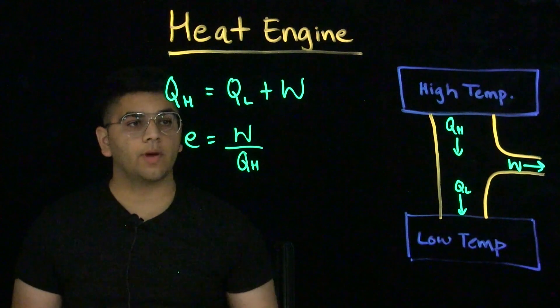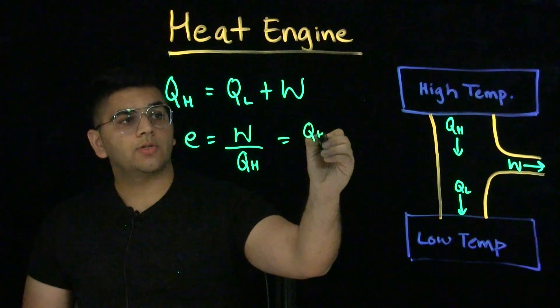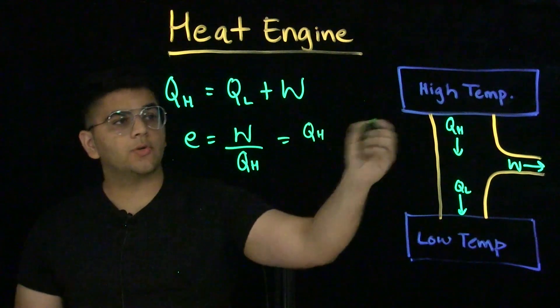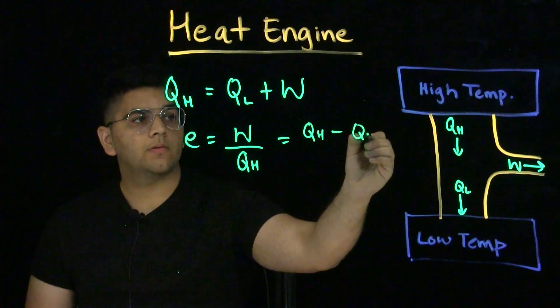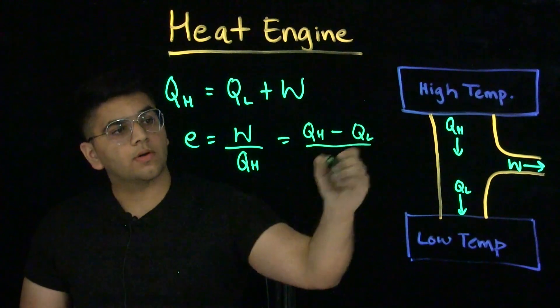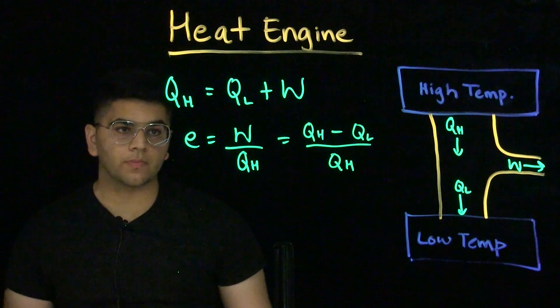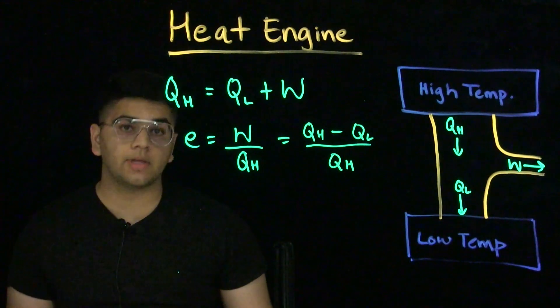We can also rewrite this to say that QH, heat exiting the high temperature, minus QL, heat entering our low temperature, over the heat from high temperature. This tells us how efficient the engine is.